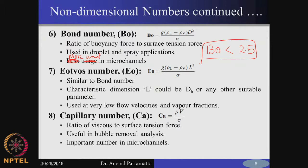Sometimes the Bond number is also referred to as the Eötvös number. People in Europe use the Eötvös number definition while people in the US use the Bond number, but they are very similar. Sometimes the Eötvös number is defined as the square root of the Bond number, but it still contains the same information — the ratio of buoyancy to surface tension force.